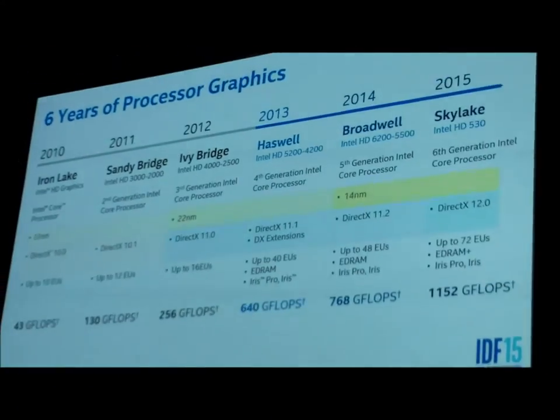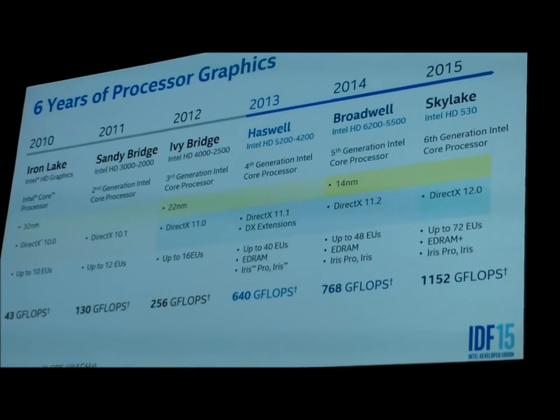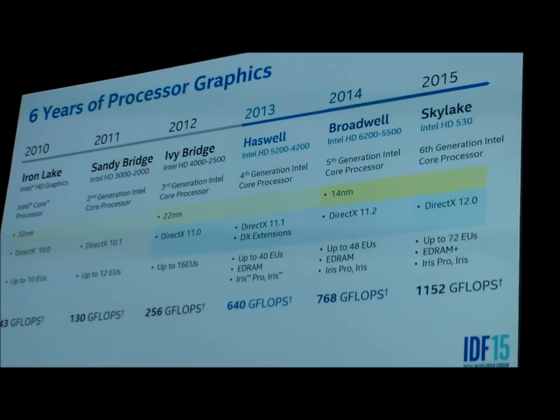To give an idea about how the investment in graphics has been changing at Intel over time — in 2010, with Iron Lake, was really when we started the family we call processor graphics. By processor graphics, we mean graphics that's integrated on the CPU die, forming a larger SoC and taking advantage of the latest process. We're now on our sixth generation of processor graphics, and you can see the kind of investments that have been added over time in increasing capability and capacity.